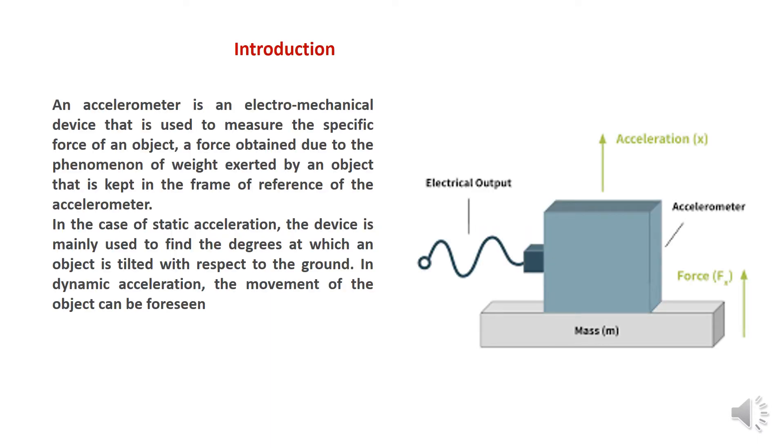Introduction part: an accelerometer is an electromechanical device that is used to measure the specific force of an object, a force obtained due to phenomena of weight exerted by an object that is kept in the frame of reference of the accelerometer. We know the relationship studied in our earlier classes during school life that F equals to MA, force equals to mass into acceleration.